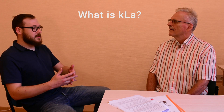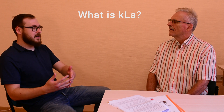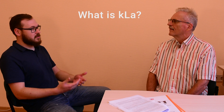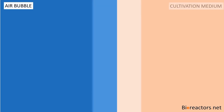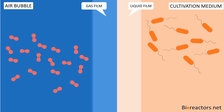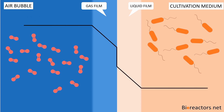Usually people see it like this: if KLA is higher, then the system is more efficient in providing oxygen to the cells. The notion of KLA arises from the two-film theory, which postulates that mass transfer between two phases takes place through a boundary layer between those phases. The rate of diffusion of a component between phases is dependent on the mass transfer coefficient, which for liquids is often written as KL.